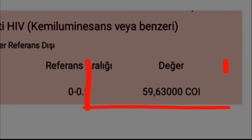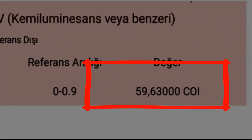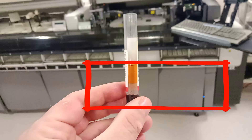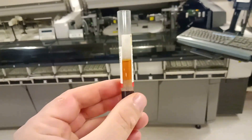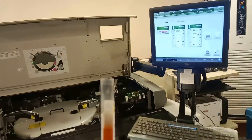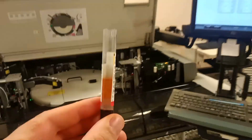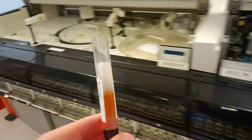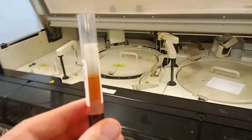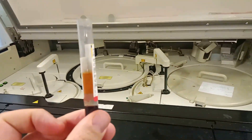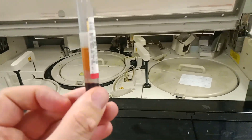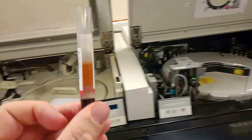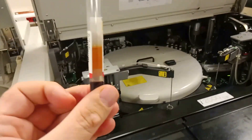The fourth-generation testing platforms used to test for HIV have a specificity of approximately 99.5%, meaning that if 1,000 uninfected people are tested, around 5 people — 0.5% — will have a false positive result.